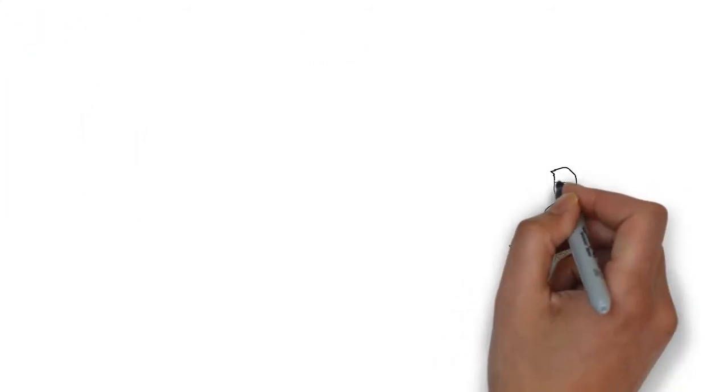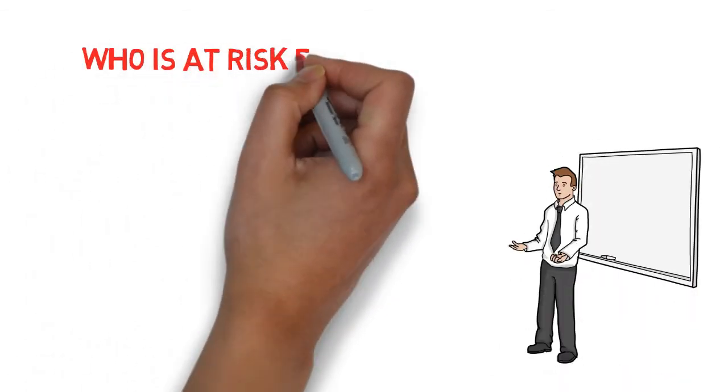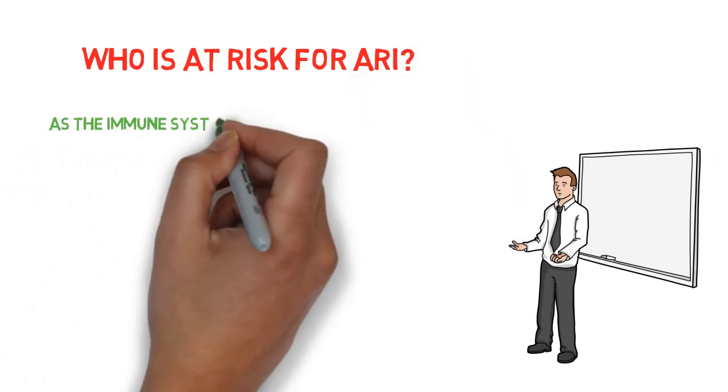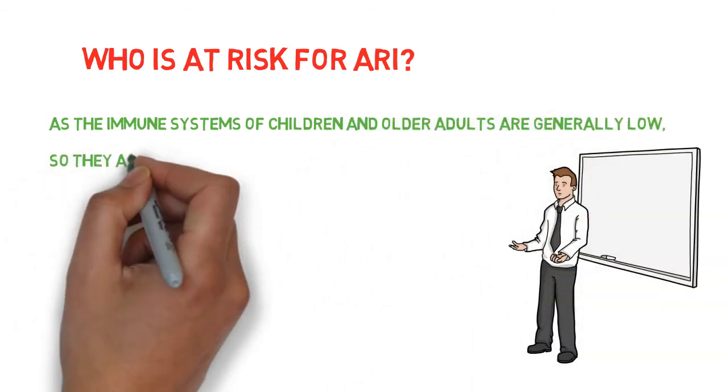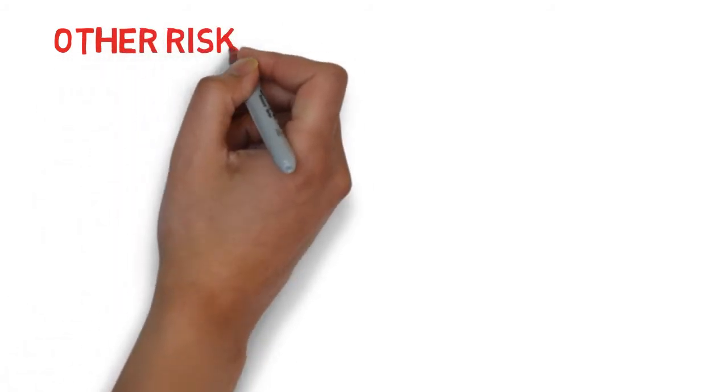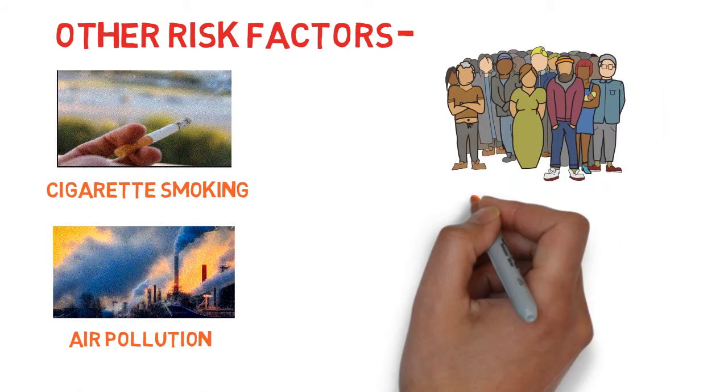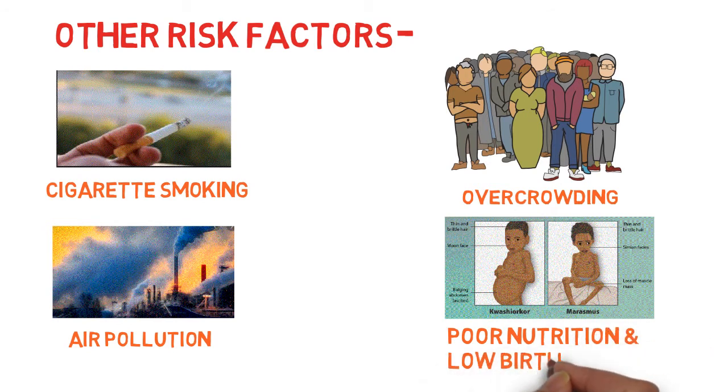Now we will see who is at risk for acute respiratory infection. As the immune system of children and older adults are generally low, they are more prone to be infected. Other risk factors like cigarette smoking, air pollution, overcrowding, poor nutrition, low birth weight, etc. are also significant.